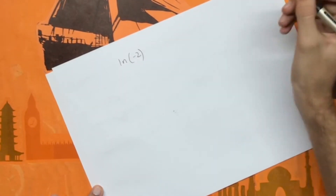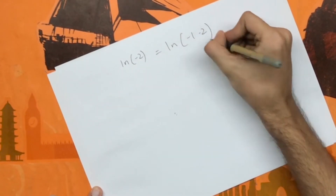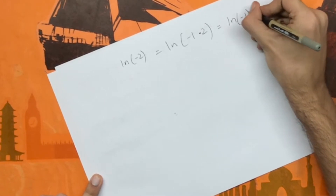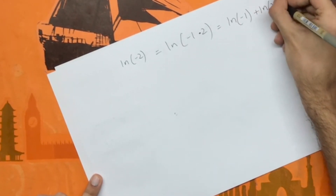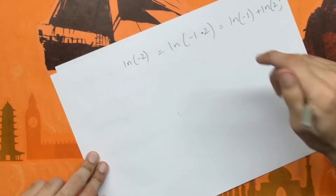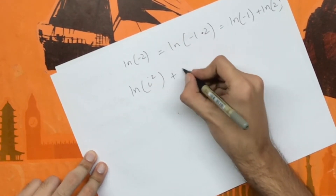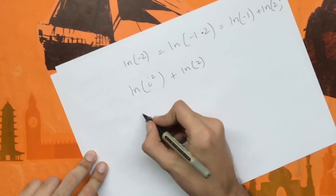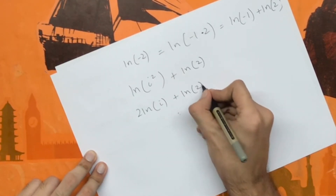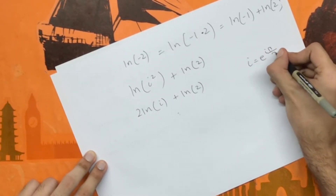We can write the natural log of negative 2 as the natural log of negative 1 times 2. By the property of logs, this becomes the natural log of minus 1 plus the natural log of 2. Using the fact that minus 1 is i squared, we can write this as the natural log of i squared plus the natural log of 2, and taking the 2 outside as another log property.